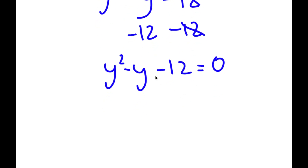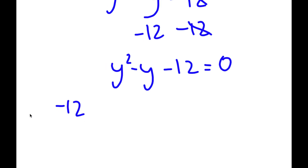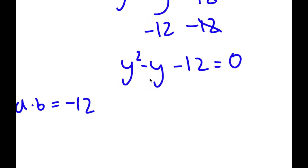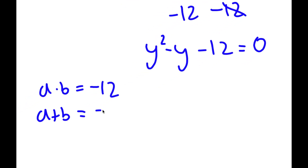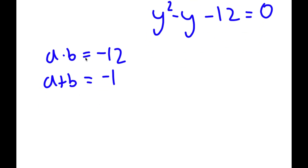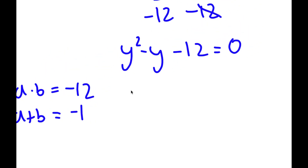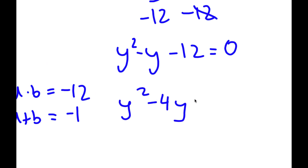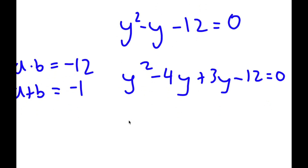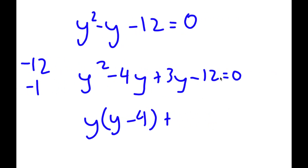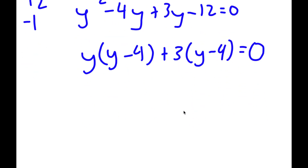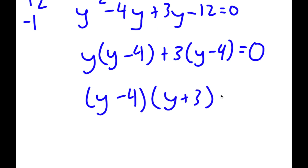To factor this, I need to find two numbers that multiply to get negative 12 and add to get negative 1. Negative 4 and 3 work because negative 4 times 3 is negative 12, and negative 4 plus 3 is negative 1. So now I have y squared minus 4y plus 3y minus 12 is equal to 0. Factoring out y from y squared minus 4y, and 3 from 3y minus 12, I get y times y minus 4 plus 3 times y minus 4 is equal to 0. Factoring out y minus 4, I get y minus 4 times y plus 3 is equal to 0.